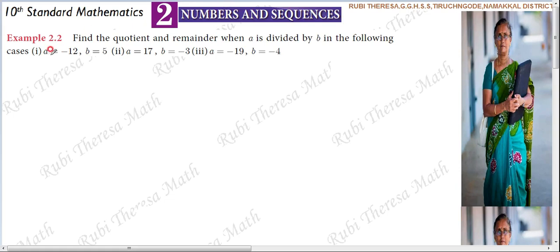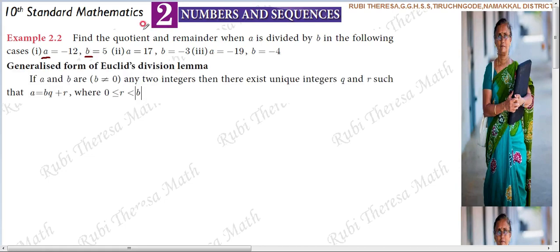They have given A and B, where A is divided by B, which means A is your dividend and B is your divisor. We have given a generalized form of Euclid division lemma — it is applicable to both positive and negative integers.